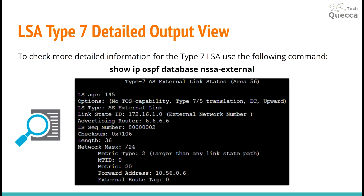To check more detailed information for a Type 7 LSA, you can use the command 'show ip ospf database nssa-external'. Here you can find the Link State ID, which is the prefix of the network in this LSA, the advertising router, sequence number, checksum, mask, and also the metric.